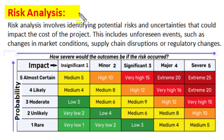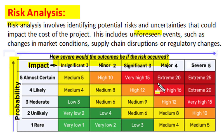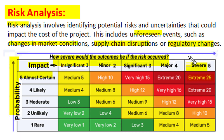Risk analysis is another tool used in financial projections. It involves identification of potential financial risks or uncertainties that could impact the cost of a project. Usually a 5x5 matrix is used for financial risk analysis — a 5-scale probability for unforeseen events such as changes in market conditions, supply chain disturbances, or regulatory changes is placed on one side, and the amount of impact on the other. Events that are almost certain and produce the severest impact are classified as extreme risks and handled with top priority.